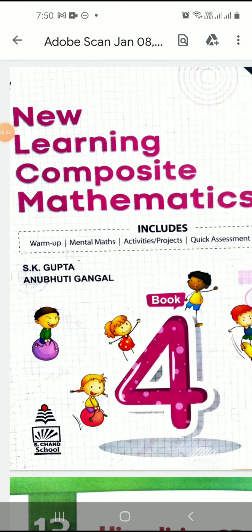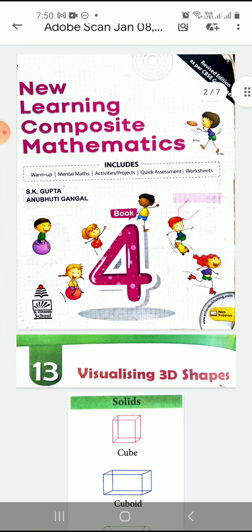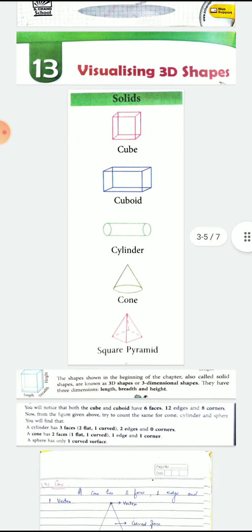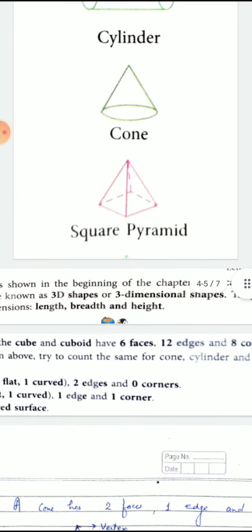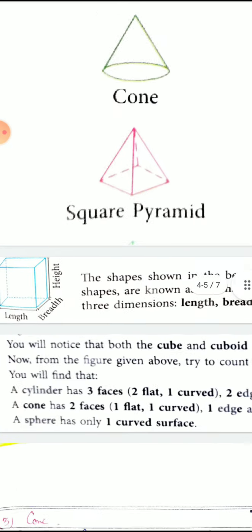Hello students, how are you? In today's class of mathematics for class 4, I will explain some 3D shapes and visualizing 3D shapes. Look at these figures: solids, cube, cuboid, cylinder, cone, square pyramid. Actually, these all are 3D shapes.